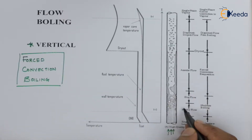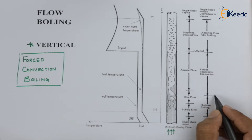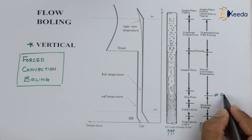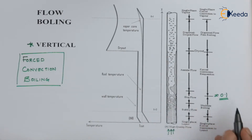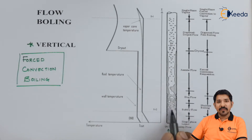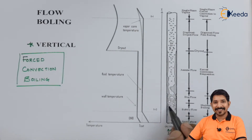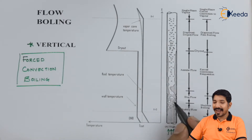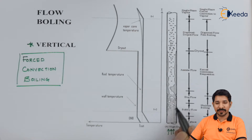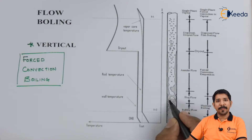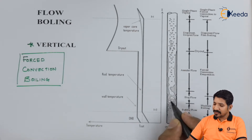After the bubbly region, as the void fraction reaches approximately 0.1 — meaning 10% is occupied by vapor — the bubbles grow in size and start collecting together. This is called slug formation; slugs are essentially bigger bubbles.